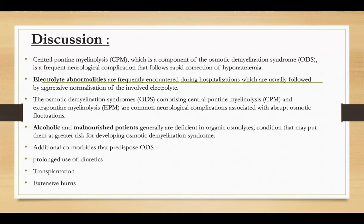Coming to the discussion: central pontine myelinolysis, which is a component of osmotic demyelination syndrome, is a frequent neurological complication that follows rapid correction of hyponatremia. Electrolyte abnormalities are frequently encountered during hospitalization, usually followed by aggressive normalization of the involved electrolyte. The osmotic demyelination syndrome, comprising central pontine myelinolysis and extra pontine myelinolysis, is a common neurological complication associated with abrupt osmotic fluctuation. Alcoholics and malnourished patients are generally deficient in organic osmolytes and may be at greater risk for developing osmotic demyelination syndrome.